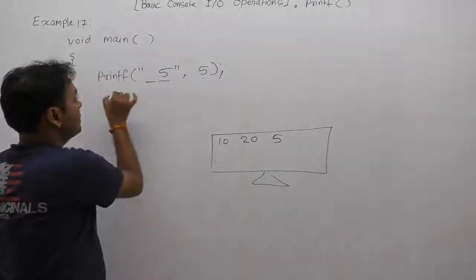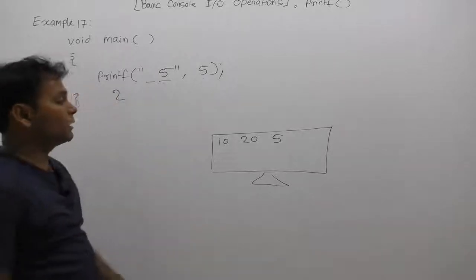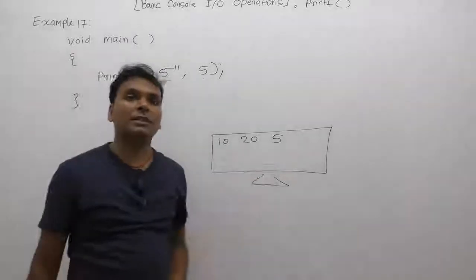Then the final result is space 5. How many symbols are printed by that? 2. Therefore it will return 2. But the final message is 10 space 20 space 5 on the console.